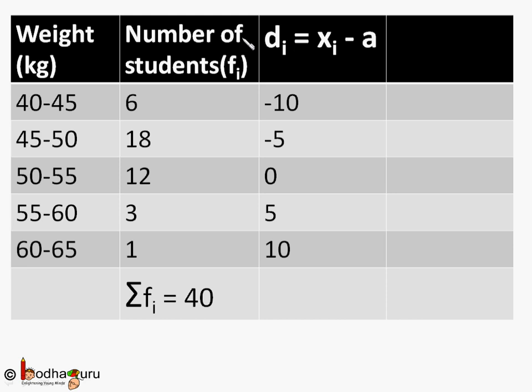Let us start with the assumed mean method. We calculate the deviation di equal to xi minus a like we learned in the earlier video. We got di equal to minus 10, minus 5, 0, 5, 10. Look carefully, all these values of di have a common factor. All can be divided by 5, which is the class size.